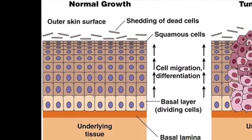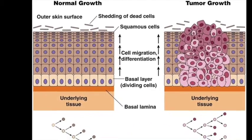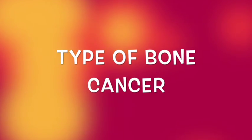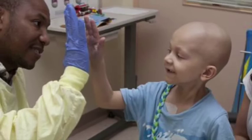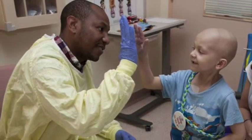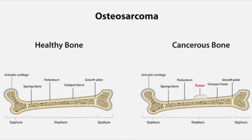Osteosarcoma is when cells in or on your bone become cancerous and have mutated DNA instructions. Osteosarcoma is a type of bone cancer. This kind of cancer is common in children, so the doctors and nurses specialized with bone cancer know how to take care of little children. Osteosarcoma usually happens on the bones of your legs or arms, though it can grow on other bones.